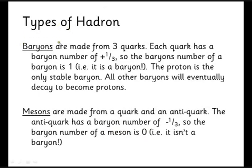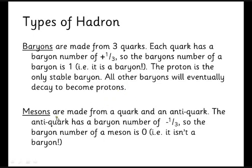Hadrons are split into two groups. One group is called baryons — these are hadrons made from three quarks. Each quark has a baryon number of plus one-third, so three of them together give a baryon number of one, which tells you it's a baryon. If you've got anti-quarks, the baryon number is minus one-third, giving minus one — an antibaryon. The key fact to know is that the proton is the only stable baryon; every other baryon will decay until it eventually becomes a proton.